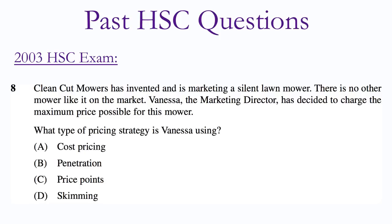Well, by charging the maximum possible price for a new and intuitive product, the lawn mower in this case, and one that's silent, Vanessa is skimming the product, meaning setting the highest possible price. Therefore, option D is the correct answer.